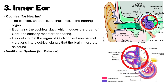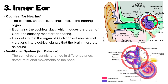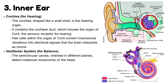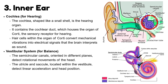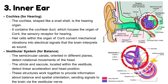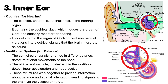Vestibular system, for balance — the semicircular canals, oriented in different planes, detect rotational movements of the head. The utricle and saccule, located within the vestibule, detect linear acceleration and head position. These structures work together to provide information about balance and spatial orientation, sending signals to the brain through the vestibular nerve.